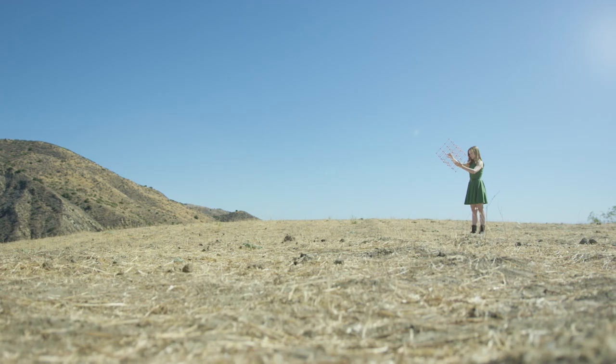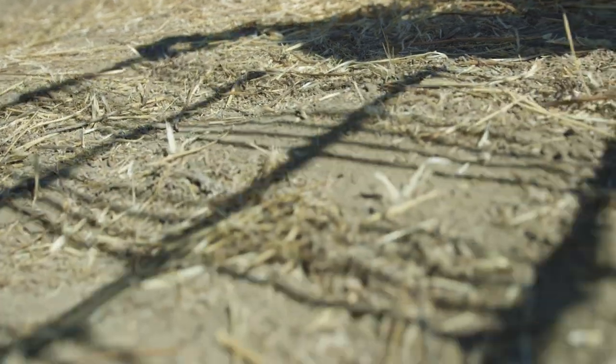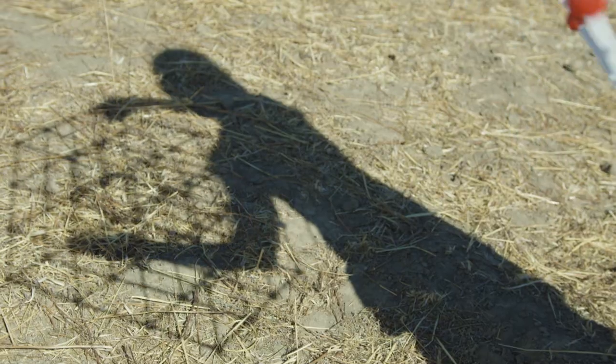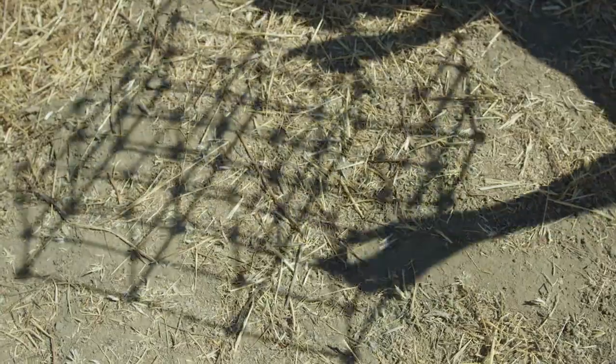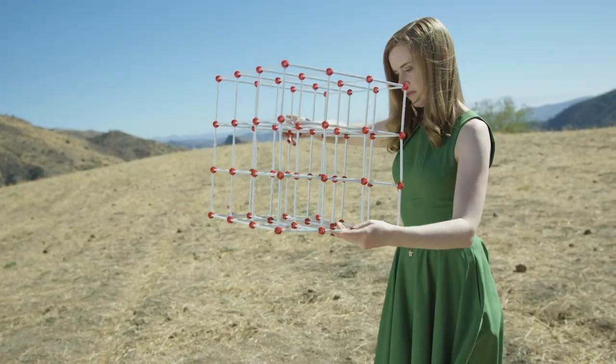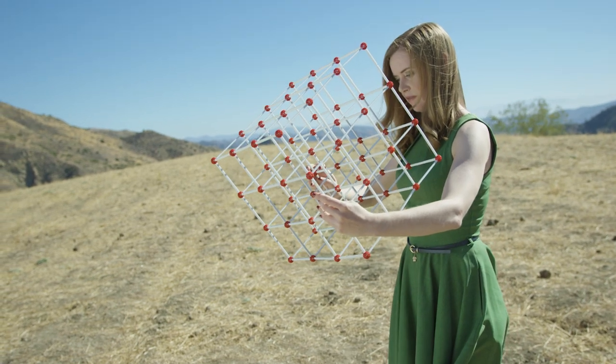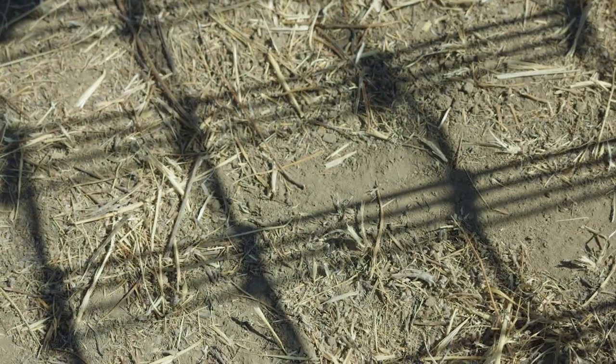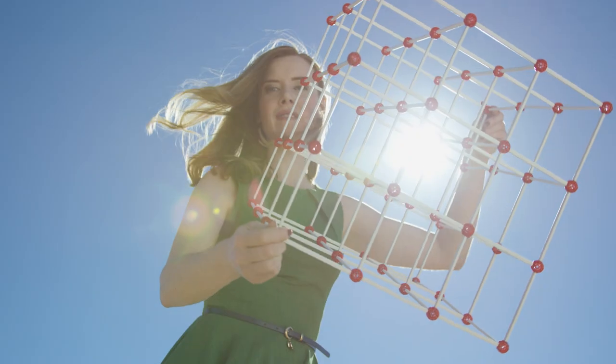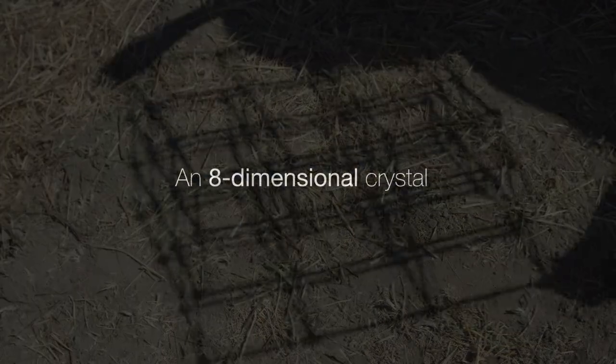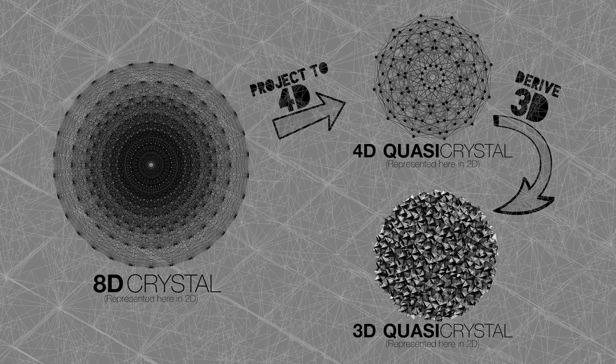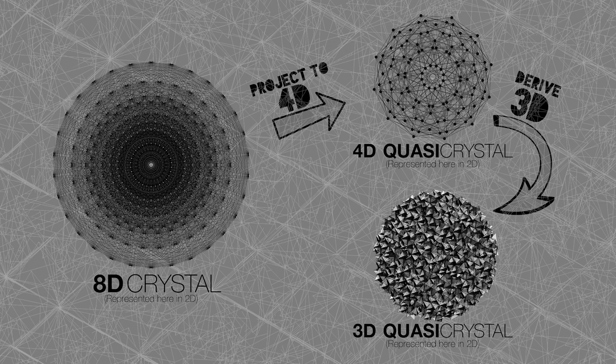When you take a cube, a wireframe of a cube, and you hold it up to the sun and project it down as a shadow, you don't invent the way those edges, the twelve edges of the cube, shrink and fit together in the shadow. It's given to you by geometric first principles such as the Pythagorean theorem relating to the angle by which you projected it. You can take a higher-dimensional crystal and project it to three dimensions and get a three-dimensional shadow.